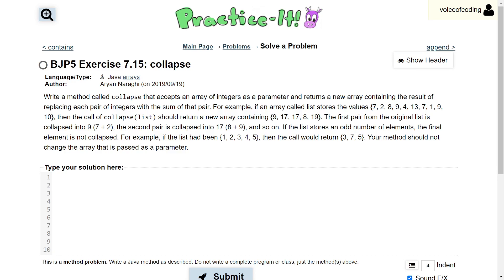The first pair from the original list is collapsed into 9, which is the sum of 7 and 2. The second pair is collapsed into 17, which is the sum of 8 and 9, and so on.